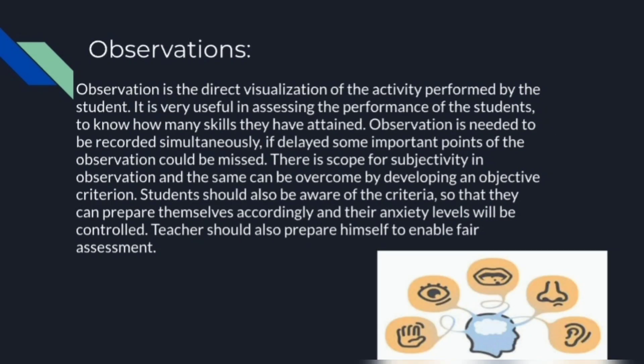Evaluation can also be conducted through Observation, which is a direct visualization of the activity performed by the student. It is very useful in assessing the performance of the student to know how many skills they have attained. There is a scope of subjectivity in observation, and this can be overcome by developing an objective criterion. The student should also be aware of the criteria so that they can prepare themselves accordingly and anxiety levels will be controlled. The teacher should also prepare themselves to enable fair assessment.